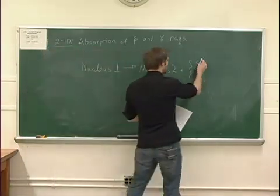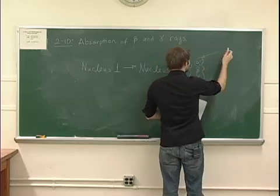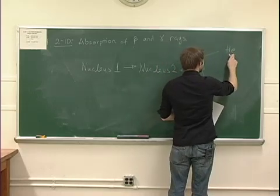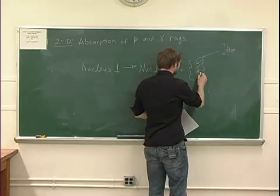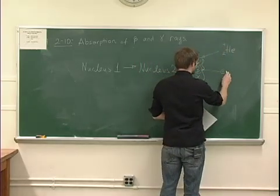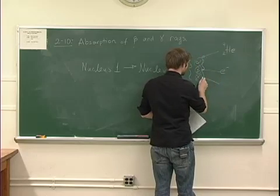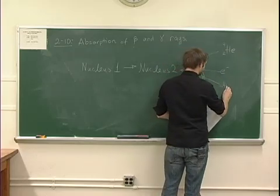It later turned out that this alpha particle was in fact also itself a nucleus, it was a helium nucleus, helium 4. The beta particle was in fact not a nucleus, it was an electron, and the gamma was in fact light, photon.